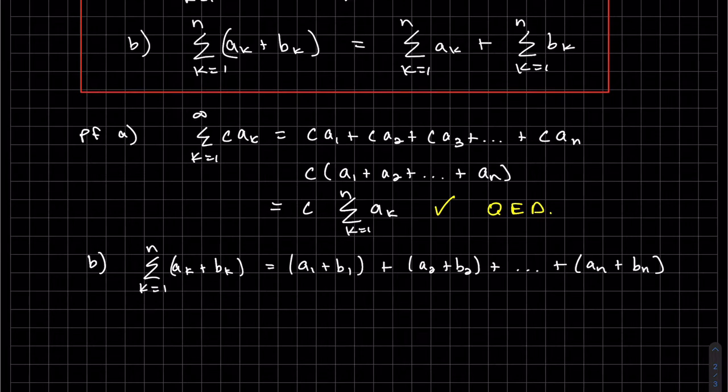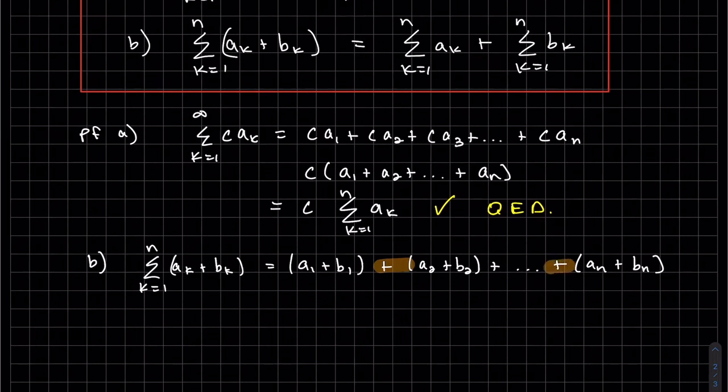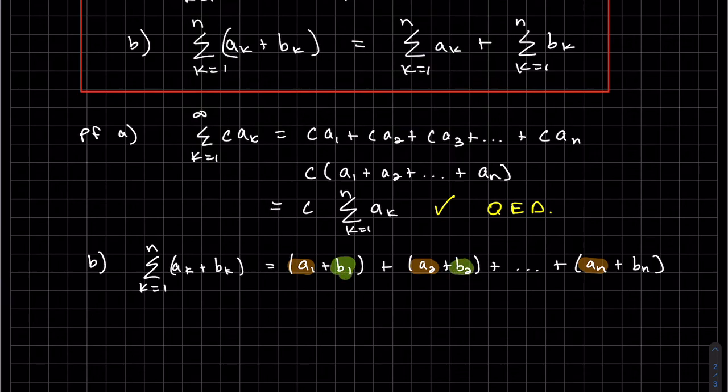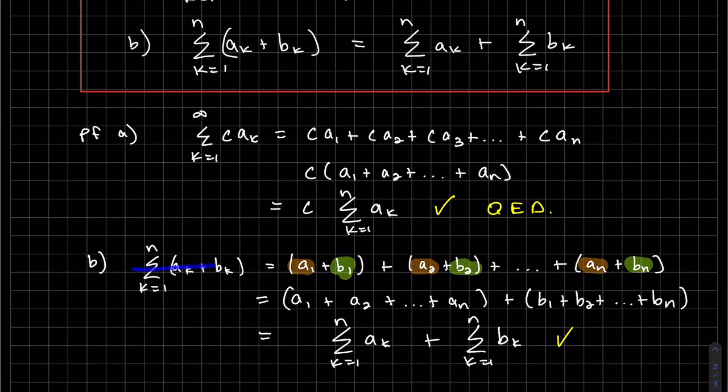So now what we're going to do, there's nothing in front of these pluses. So we can just drop the parentheses, basically. And we're going to rearrange it and add all the a's, add up all the b's. And we can see here, this is our general sum of a_i or a_k. And this is our general sum with b_k. So now we have proved part b that those are both equal.